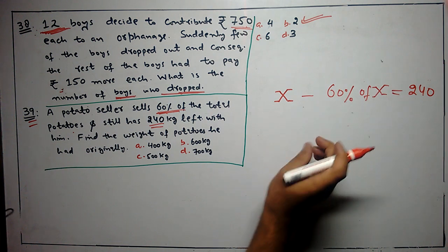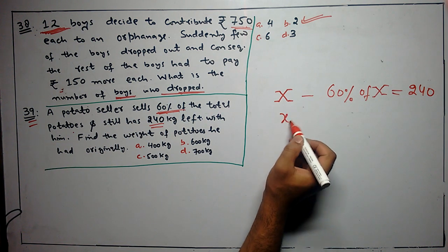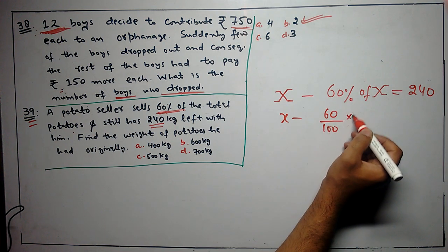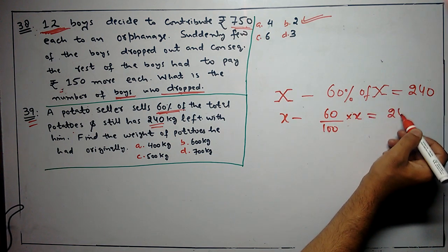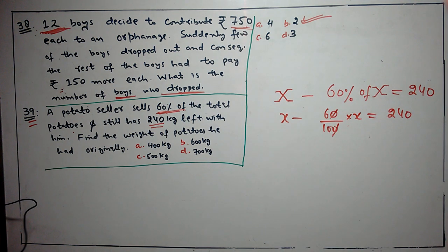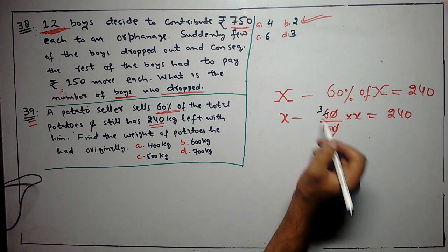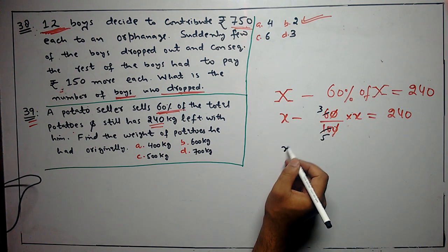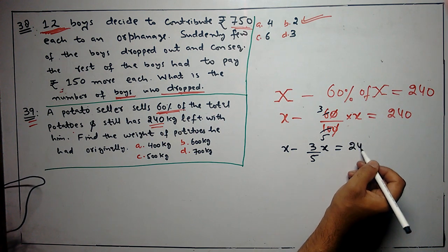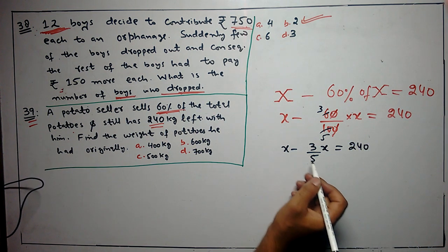We will solve this equation. x minus 60 by 100 into x is equal to 240. Simplifying, x minus 3 by 5 x is equal to 240.